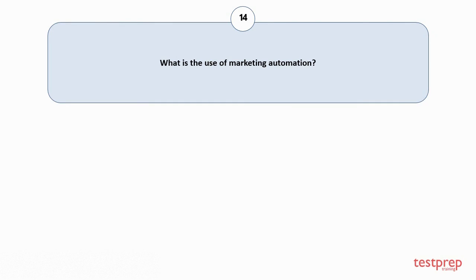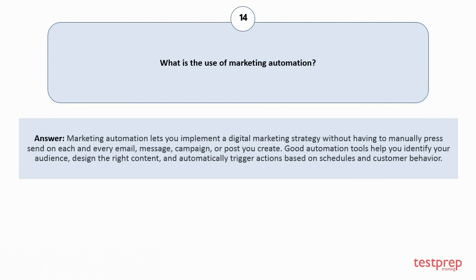Question number fourteen: What is the use of marketing automation? Marketing automation lets you implement a digital marketing strategy without having to manually press send on each and every email message, campaign, or post you create. Good automation tools help you identify your audience, design the right content, and automatically trigger actions based on schedules and customer behavior.